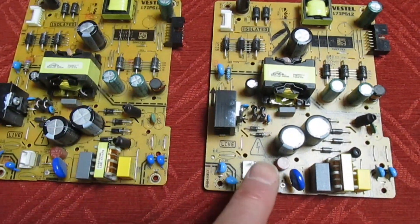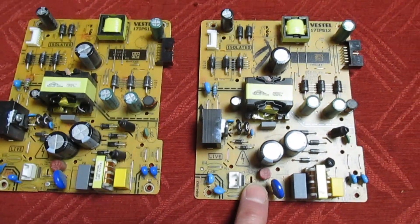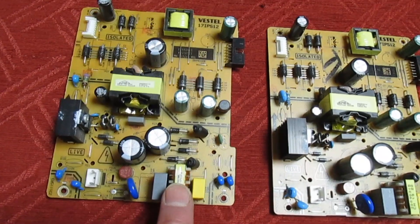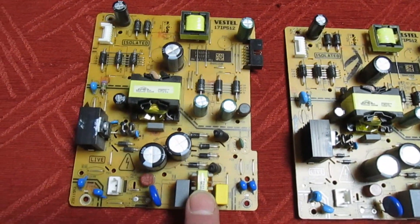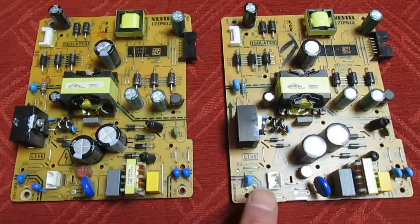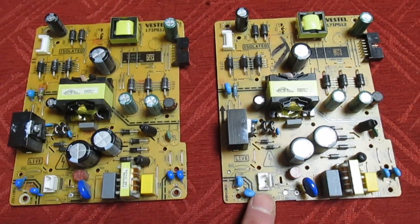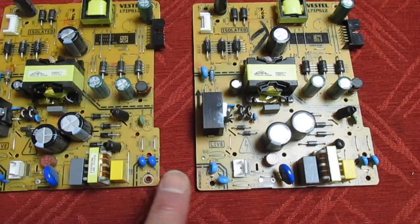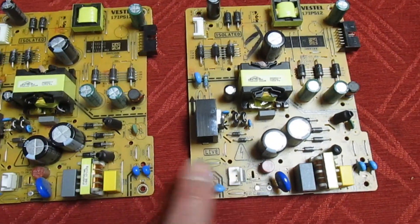I mean you could interchange them, they'll both work, but I'll show you why that's not the thing to do. If we take this one first, this is from a 49 inch TV and this one that looks identical to it is actually from a 43 inch TV. So what's the difference? The 49 inch TV has more LEDs in the screen than the 43 inch TV.